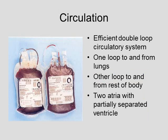For circulation, like the amphibians they have a double-loop system, which is much more efficient. One loop goes to the lungs and returns, then blood gets pumped to the rest of the body. Because of the double-loop system they have two atria and one ventricle, which in most reptiles is partially separated. This is a half step forward from amphibians, where oxygenated and deoxygenated blood can mix in the single ventricle.